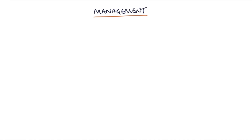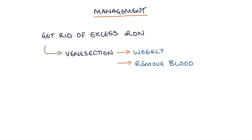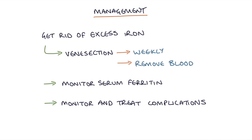To manage hemochromatosis, the key is to eliminate the excess iron from the body. This is done through venesection — a weekly protocol of removing blood from the body, and along with that blood comes the extra iron. We carefully monitor the serum ferritin and treat any complications of the condition.